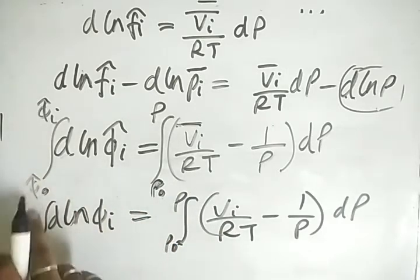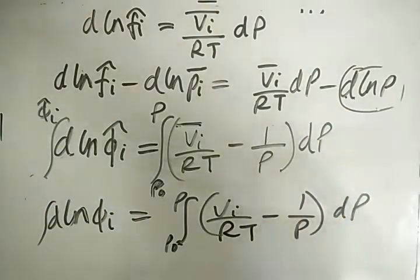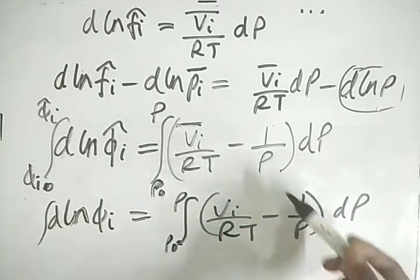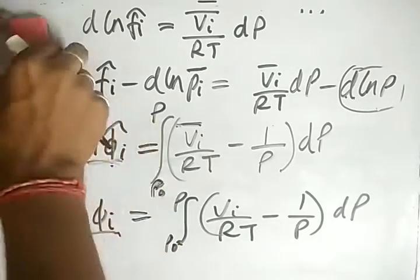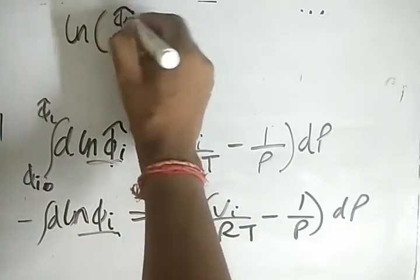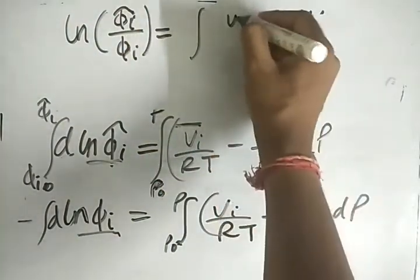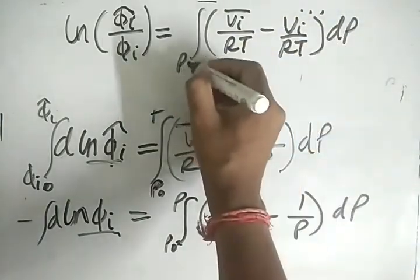At standard state we assign φi° as the reference value. Subtracting the pure-substance equation from the solution equation, and using the property that ln subtraction gives division, we obtain: ln(φi-cap / φi) = integral from P° to P of (Vi-bar − Vi)/RT · dP/P.